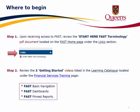Where to begin? Step 1: Upon receiving access to FAST, review the Start Here FAST Terminology PDF document located on the FAST homepage under the Links section. Step 2: Review the three Getting Started videos listed in the Learning Catalog located under the Financial Services Training page — specifically the FAST Basic Navigation, FAST Dashboards, and FAST Pin Reports video tutorials.